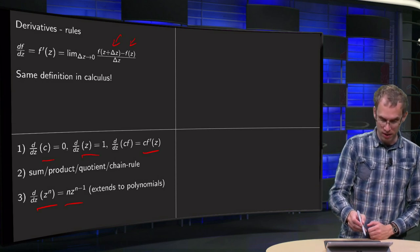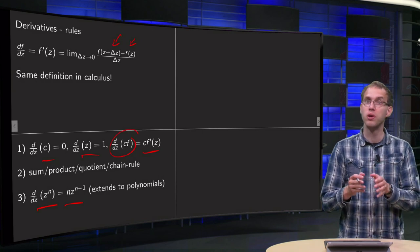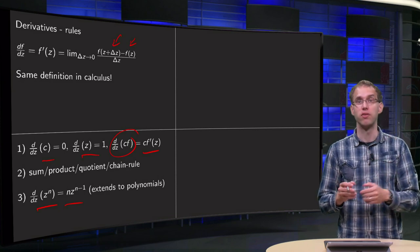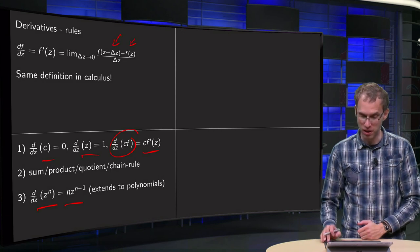And now you can apply this rule, you can take constants out and you can use the sum rule, so you can extend this to all polynomials. So derivatives of all polynomials are just what you think they would be because the same rules apply as in calculus.